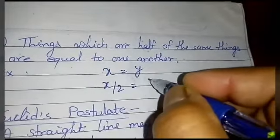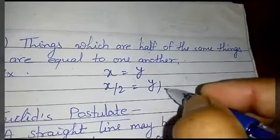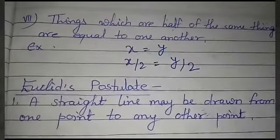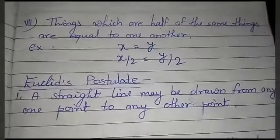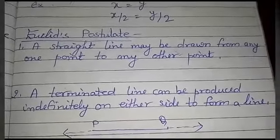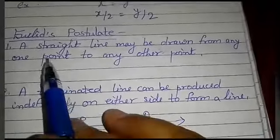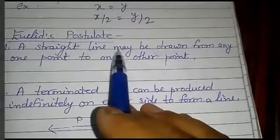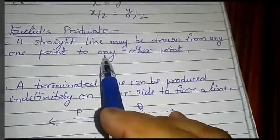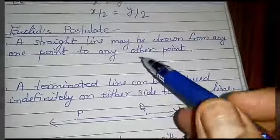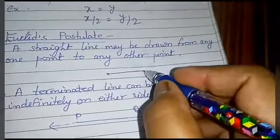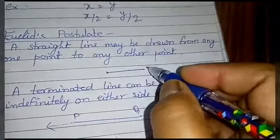These are the seven axioms of Euclid. Now, Euclid's postulates. First postulate: a straight line may be drawn from any one point to any other point.